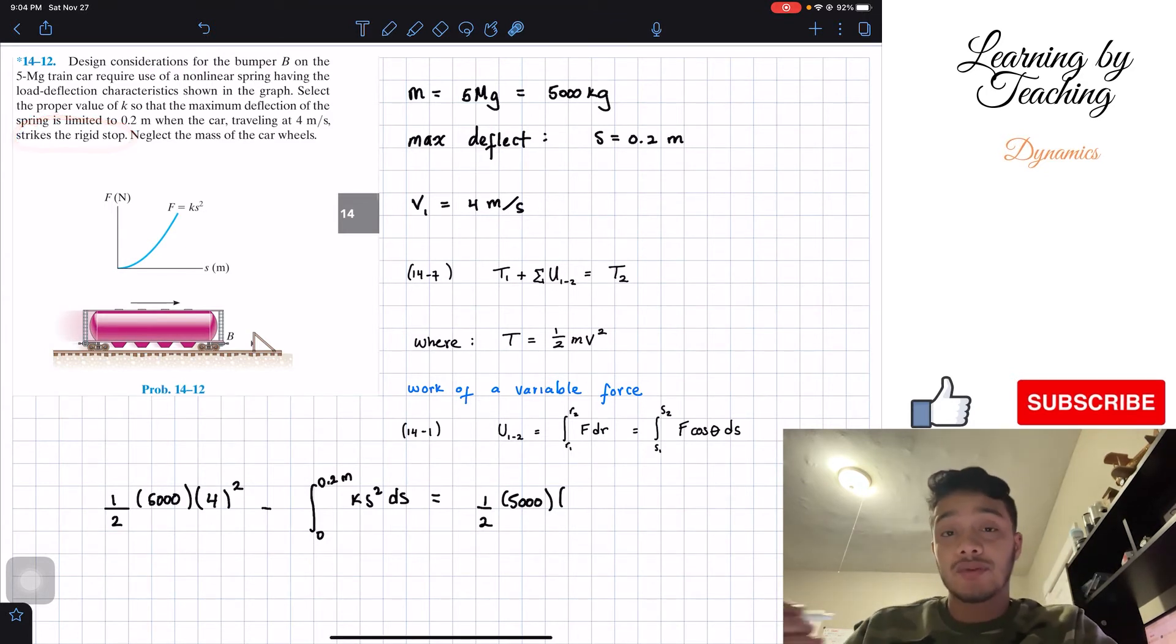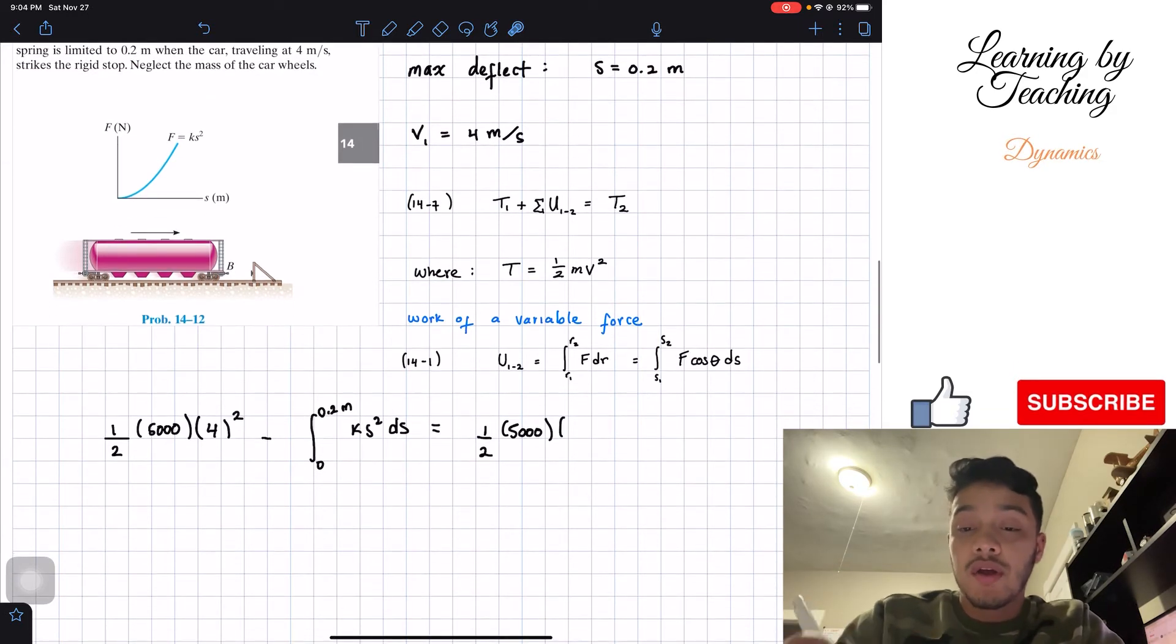However we're being told that this strikes the rigid stop, meaning that our train will halt, will go to a stop, and that means that our velocity is equal to zero.